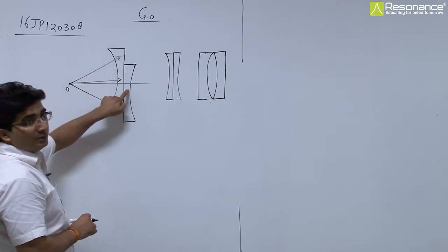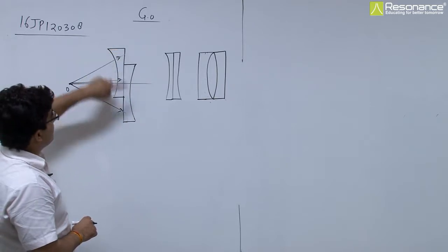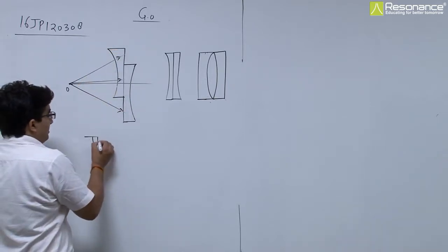This is the combination of two lenses. This is a separate lens, this is also a separate lens. So three images are possible.